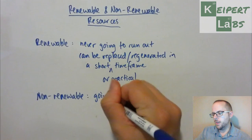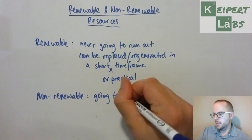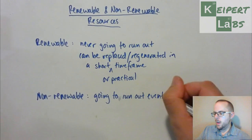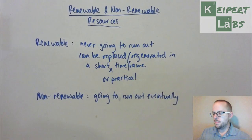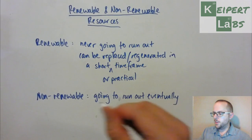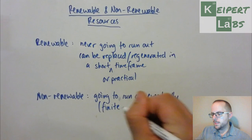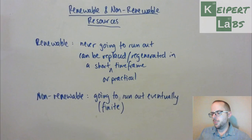Non-renewable resources are going to run out eventually. Now depending on how much we use, or how much we need for what we do with it, that might be in a short timeframe or a long timeframe, but it's going to run out eventually. We would say it's finite, which is the opposite of infinite — it's a finite resource.